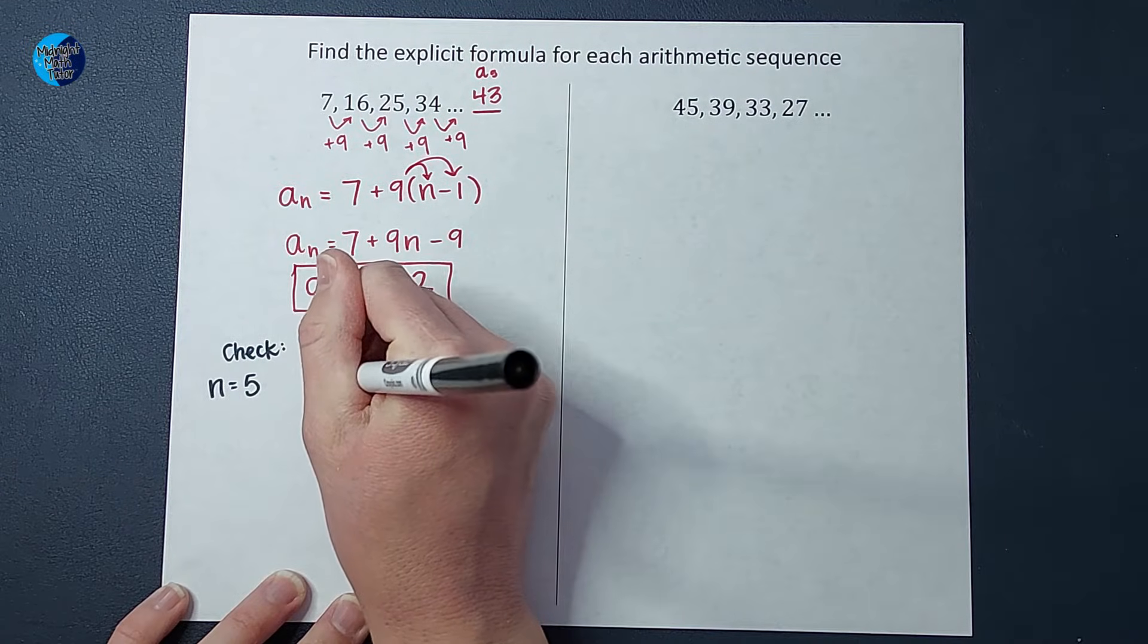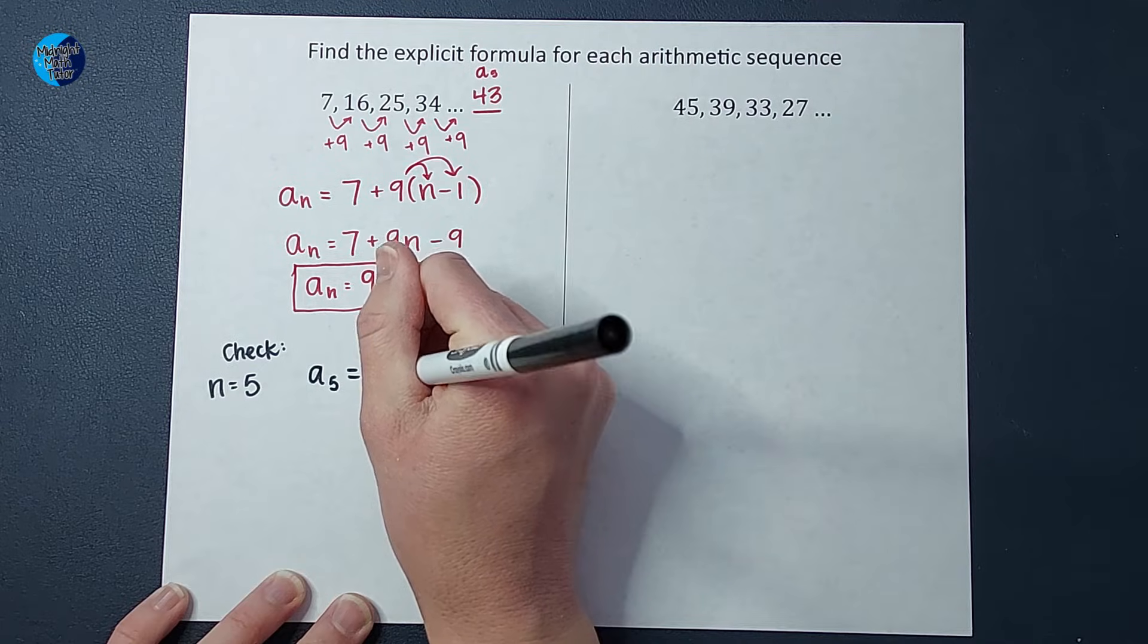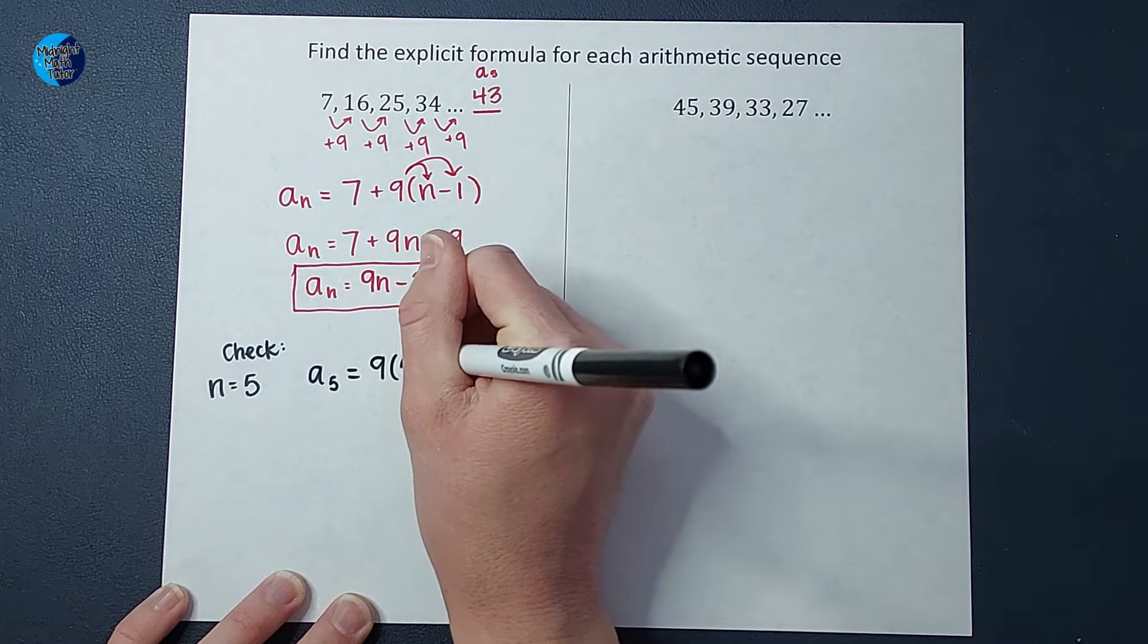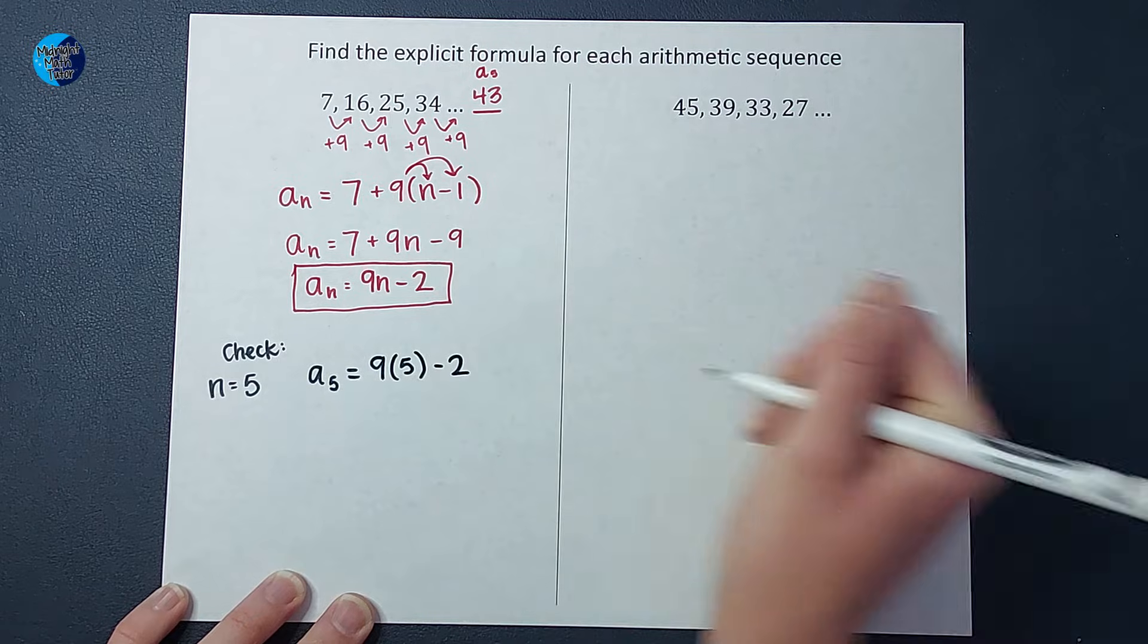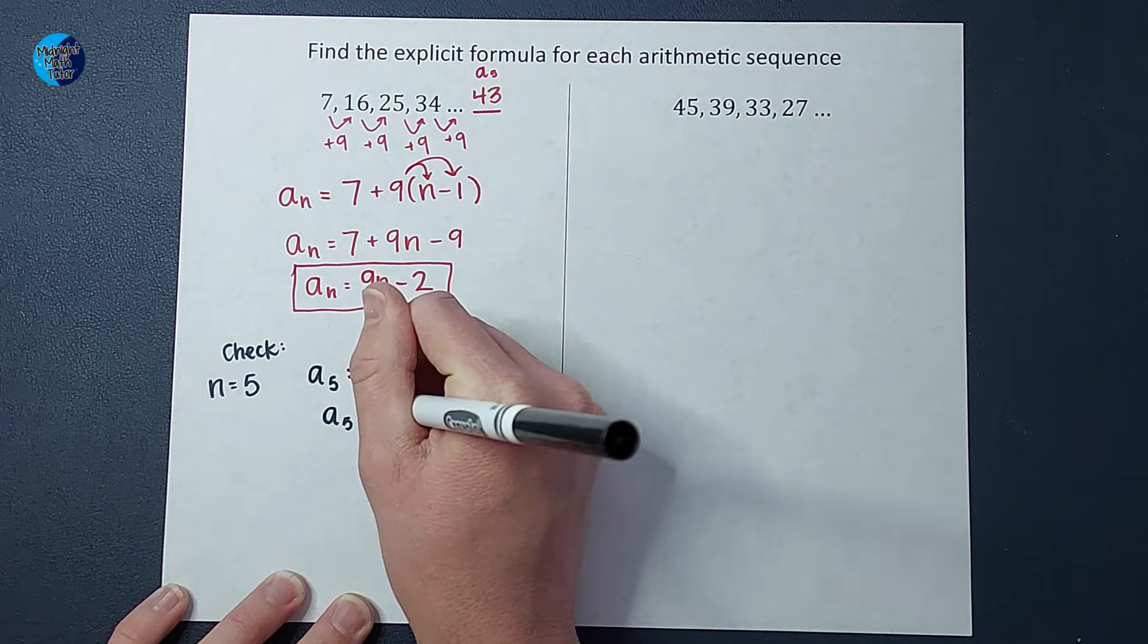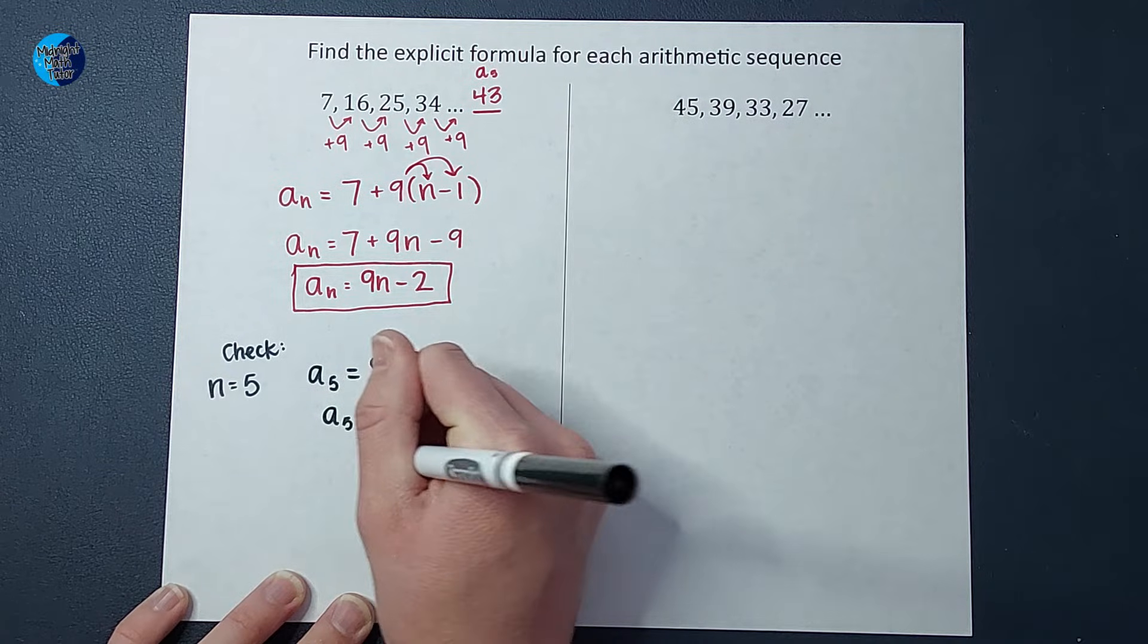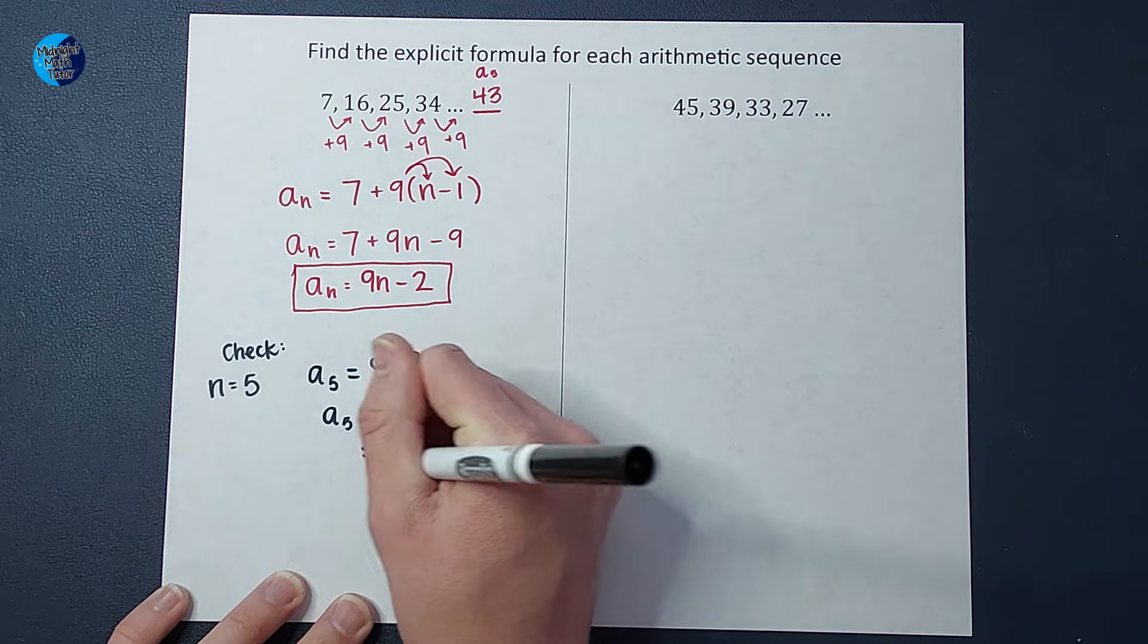A sub five is going to be equal to nine times n, which we're plugging in five minus two. So I have a sub five equals 45 minus two. Oh, I'm feeling real good about this. Equals 43. Look at that.